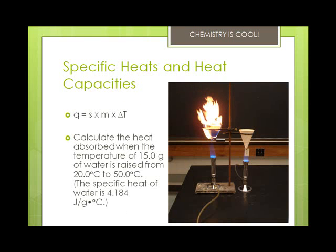To find the heat required, you must multiply the specific heat S of the substance times its mass in grams M and the temperature change delta T. Calculate the heat absorbed when the temperature of 15 grams of water is raised from 20 to 50 degrees Celsius. The specific heat of water is 4.184 joules per gram degrees Celsius.